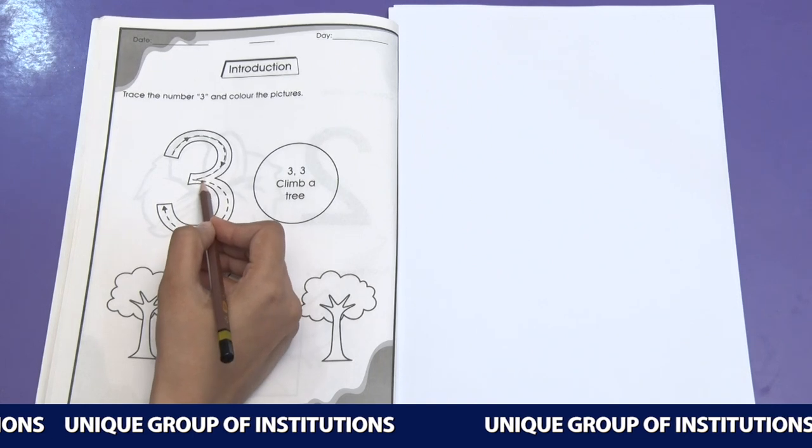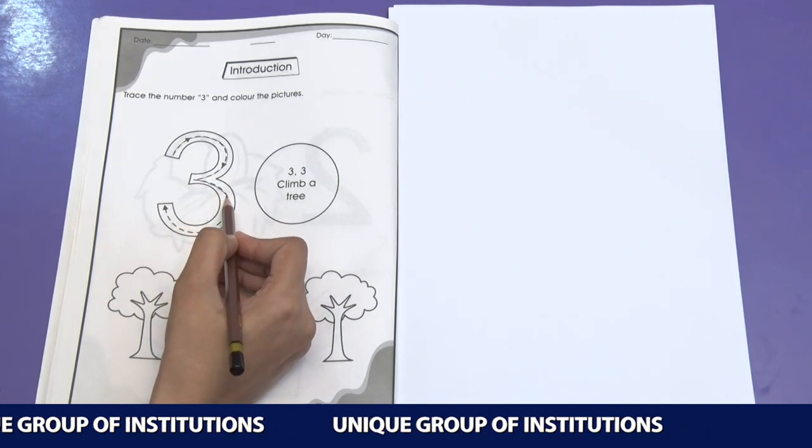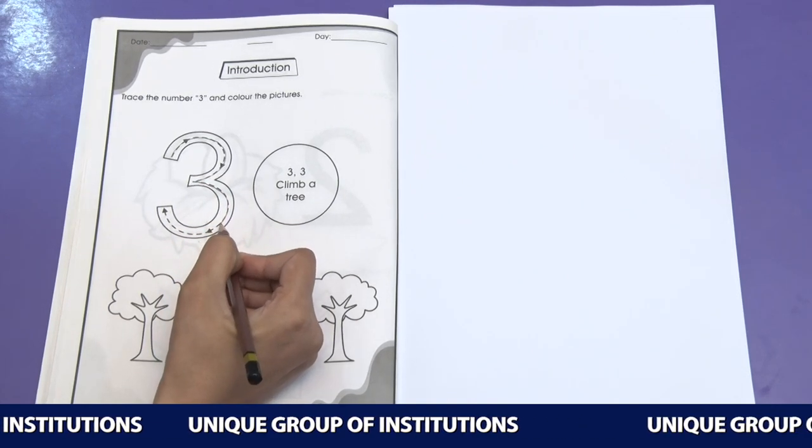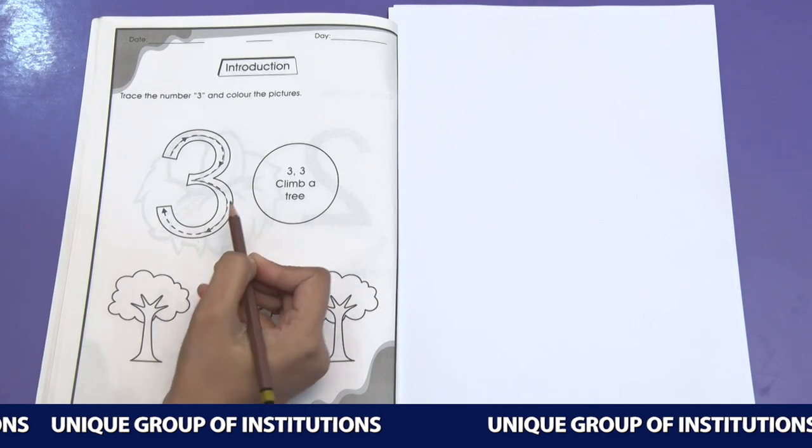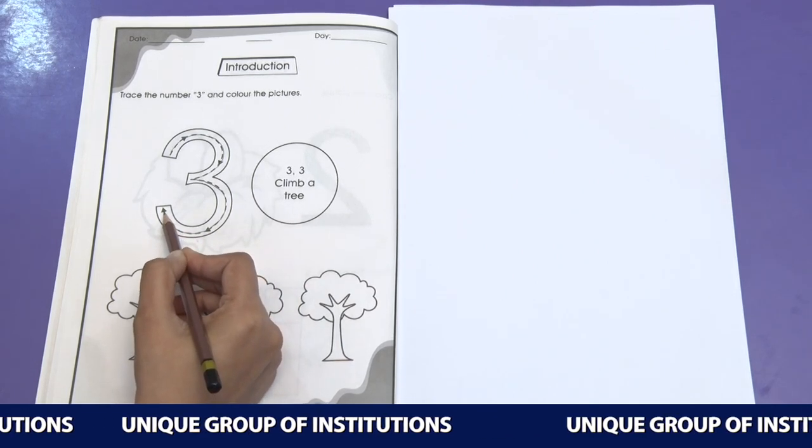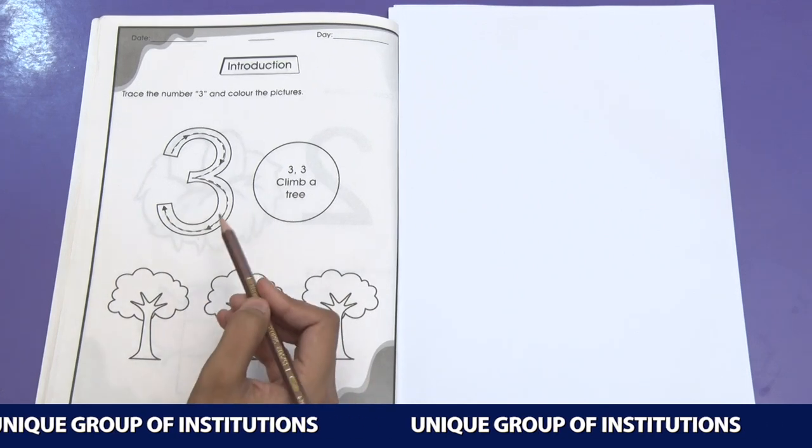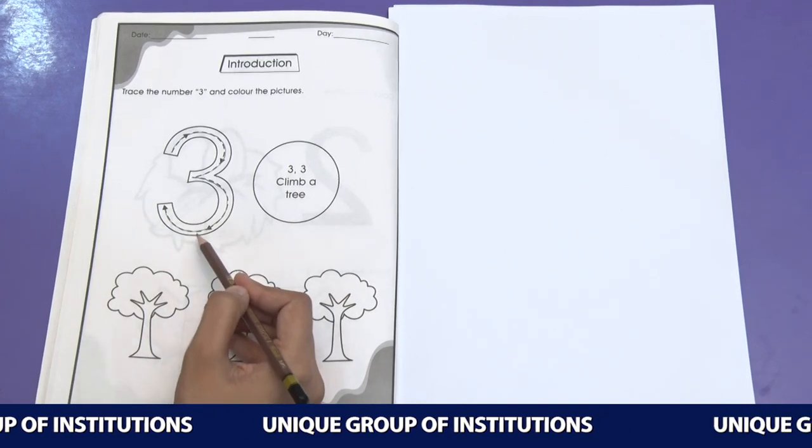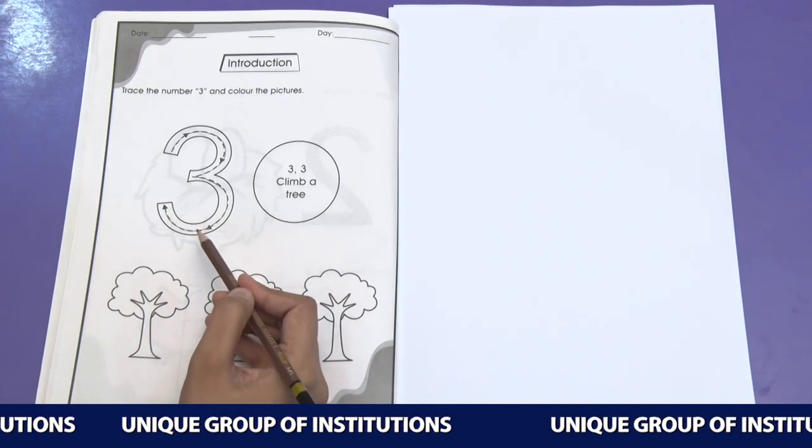Let's see how it's done. Yes! Like this. We have to follow the arrow. Yes! Did you see? How nice is this tracing? We have traced number 3.